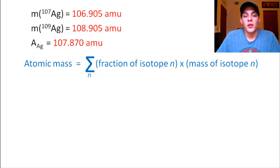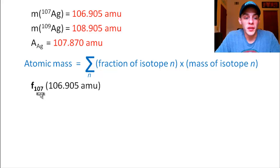So what does this look like with our numbers? Well, for silver-107, we would take the fraction of silver-107, which I'm just going to abbreviate f₁₀₇, f₁₀₇ times its respective mass, that 106.905 amu.